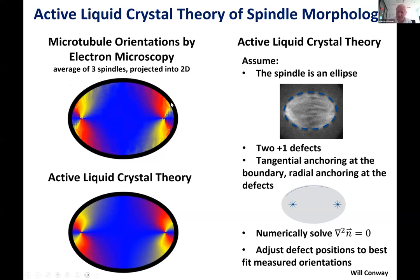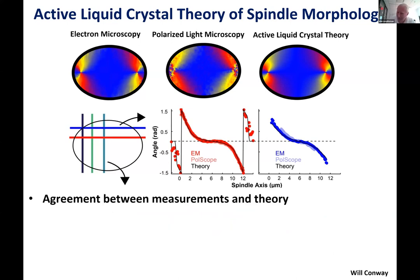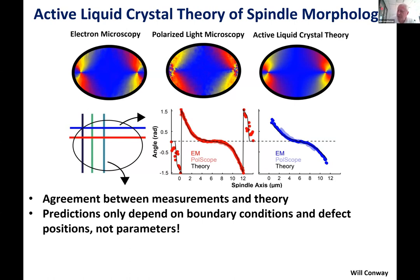He numerically solves ∇²n = 0 everywhere with those boundary conditions, then manually moves the defect positions to best match the EM results. This prediction is compared to the orientation of microtubules measured throughout the spindle by electron microscopy and by quantitative polarized light microscopy. Cuts at different positions throughout the spindle show quantitative agreement between EM, polarized light microscopy, and theory essentially everywhere. This is remarkable because the prediction depends only on boundary conditions and defect positions — no free parameters.